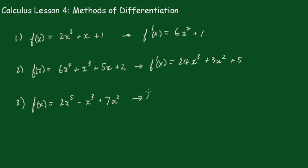And last one, f dash x equals. The 5 comes down. 10, take off the power, 4. Minus 3x squared. Plus 2 comes down. 2 times 7, 14. 14x. So it's a pretty simple little process, isn't it?